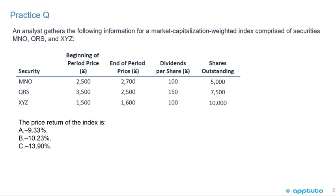The first question: an analyst gathers the following information for a market capitalization weighted index comprised of securities MNO, QRS, and XYZ. We're given a table with the security, the beginning of period price, the end of period price, the dividends per share, and the shares outstanding. The question asks: the price return of the index is A, negative 9.33%, B, negative 10.23%, or C, negative 13.9%.